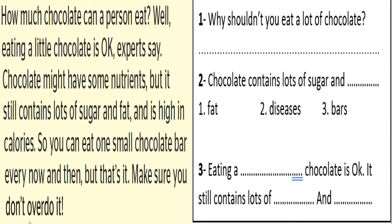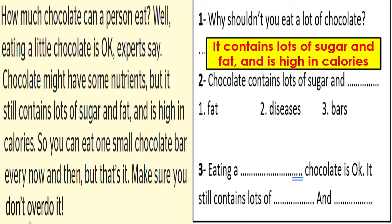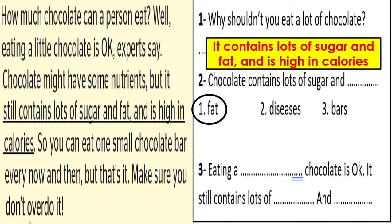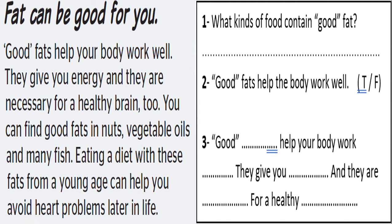Continue with the second paragraph. Read it fast. Now answer the question: why should you not eat a lot of chocolate? Because it contains lots of sugar and fat and is high in calories. Complete the sentence: eating a lot of chocolate — this contains a lot of sugar and fat. So the first answer is sugar and fat. Move now to the second part of our lesson for today.